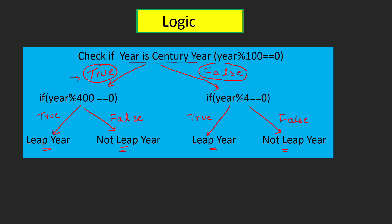If a year is a century year (true path), we check whether it is divisible by 400. If yes, we say it is a leap year; if not, we say it is not a leap year. If a year is not a century year (false path), we divide by 4 — if divisible by 4 it is a leap year, otherwise it is not. So we have just added one more condition on top of the divisibility-by-4 rule: first check whether the year is a century year.